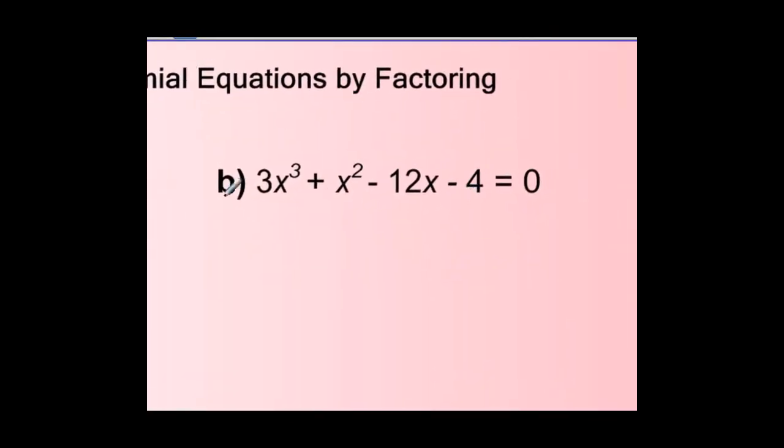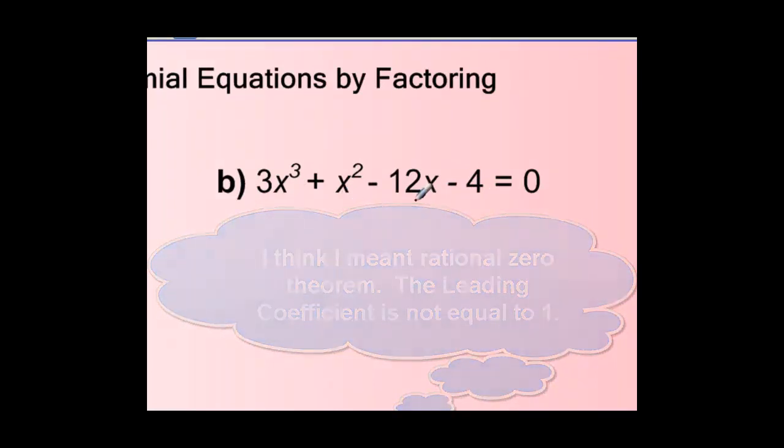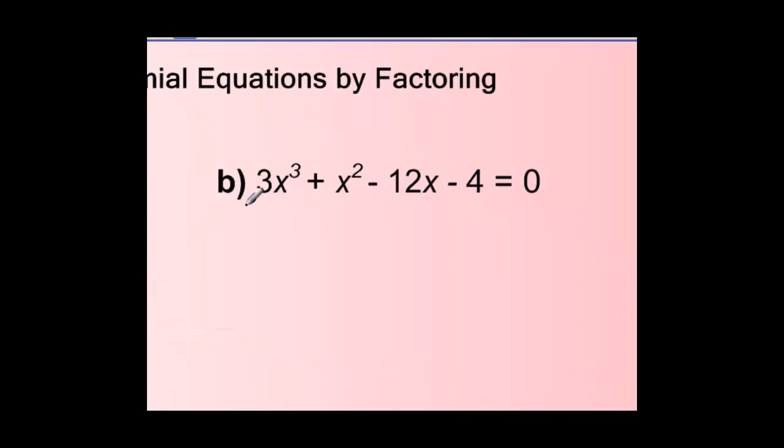In part B, if we look at this the way we were looking at polynomials yesterday, we would use the integral zero theorem to find factors of 4, and we'd use those factors of 4 to test in our x values to see if that made the polynomial equal to 0. And we can do that, and we can get the right answer. But, if we're clever, we should be able to see a shortcut in this polynomial.